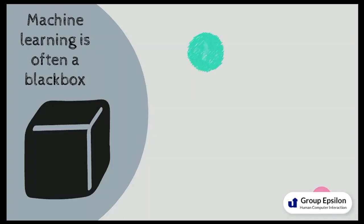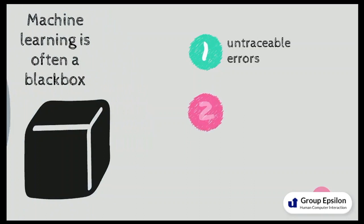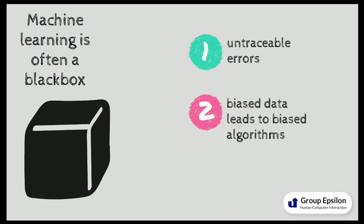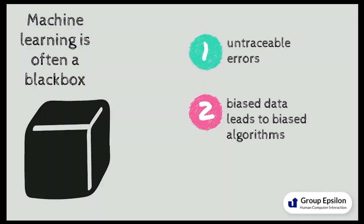Machine learning often works like a black box, meaning that errors are typically hard to trace. This lack of human insight and understanding also leads to the threat of creating biased algorithm outputs through using biased data. Studies have shown that many people still experience intense discomfort when interacting with AI that is based on a lack of trust.